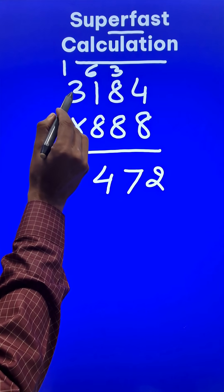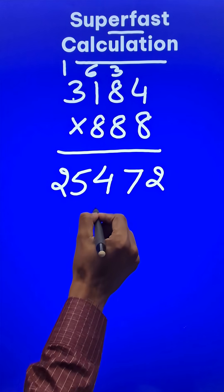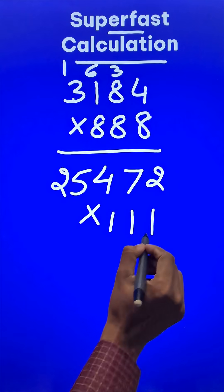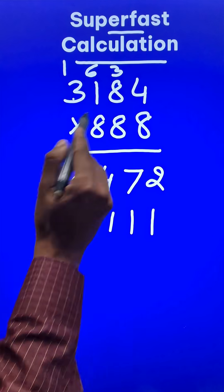8 times 3 is 24 plus 1 is 25, and now you all know that we have to multiply this by triple 1 because 8 times triple 1 is triple 8.